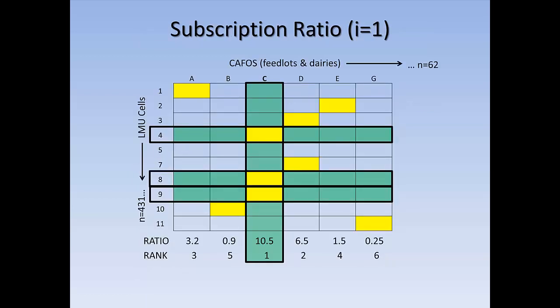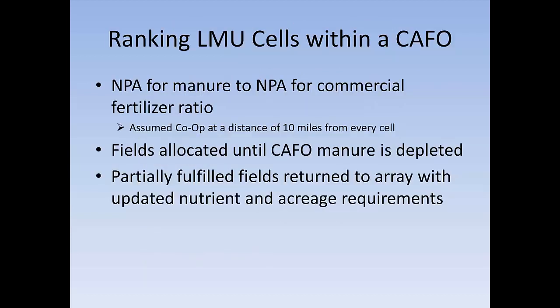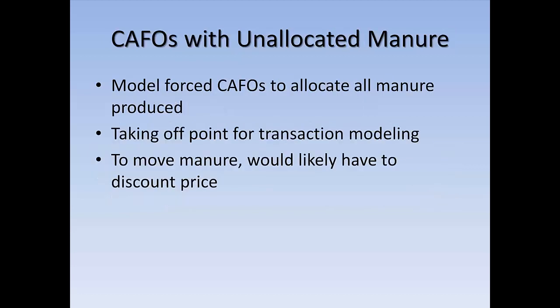Across here, we've got all the feedlots and dairies. There were 62 of them, and there were 400-some-odd LMUs vying for the use of that manure. And the yellow in each row represents the CAFO that could provide manure to that LMU at the least cost. Any LMU competing for manure would only have one least-cost CAFO to provide it. But any particular CAFO might be able to satisfy any number of LMUs, depending on how close by they were. So we had to find a way of allocating manure.